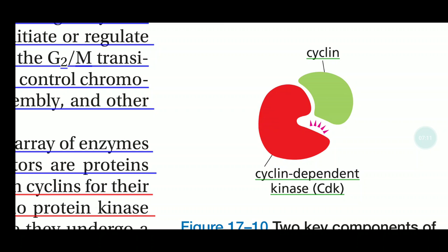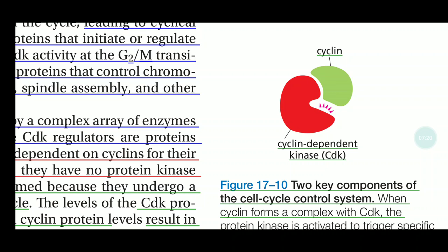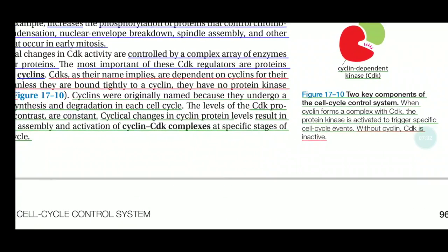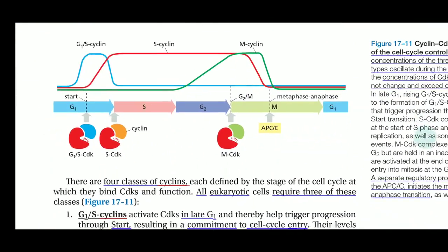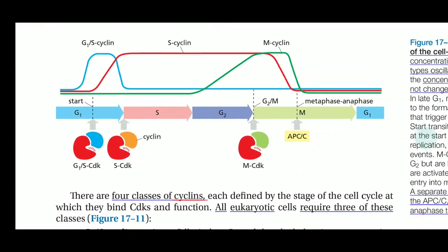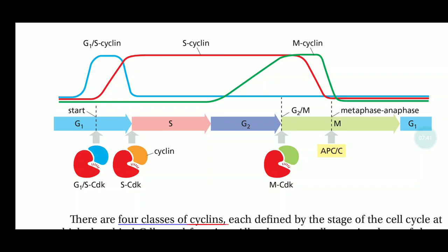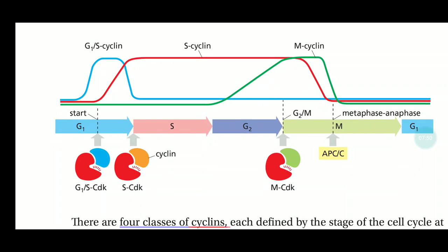The cyclical changes of cyclin protein are what give it the name 'cyclin.' In contrast, the CDK — cyclin-dependent kinase — depends on cyclin molecules to become functional but is not degraded; it is permanently present. Different regions of the cell cycle are regulated by activation of CDK: G1, S, G2/M transitions, and the metaphase transition.